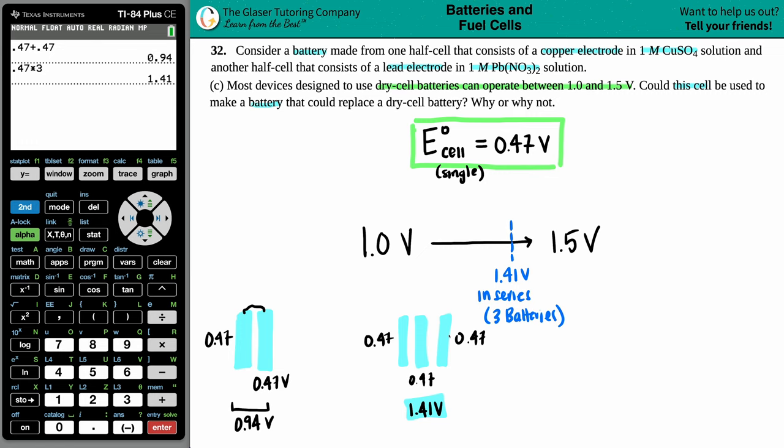And that's the answer. So could this cell be used? Yes. But it could only be used in series if you have the three batteries hooked up together and that will produce the 1.41 volts and then it could operate as a dry cell.